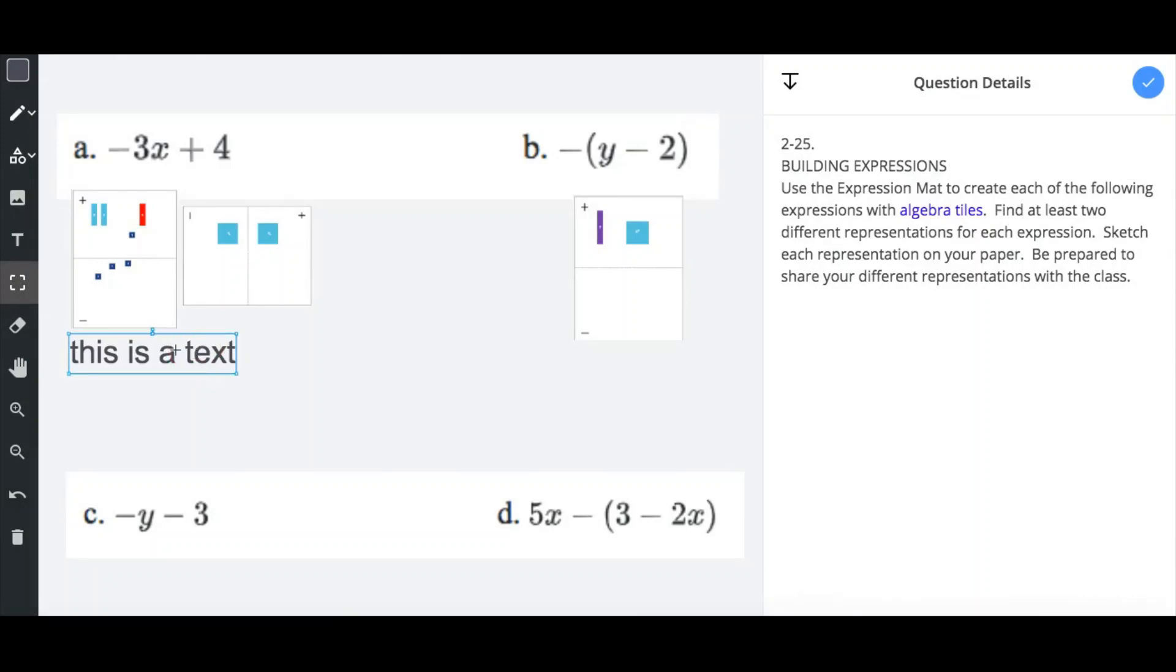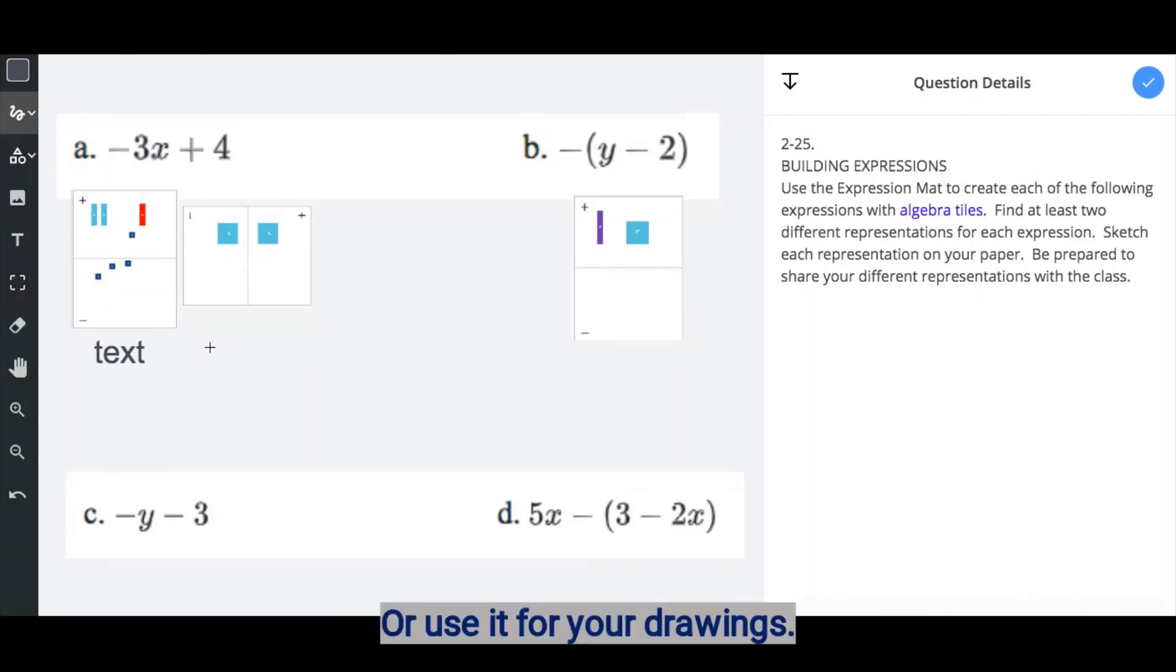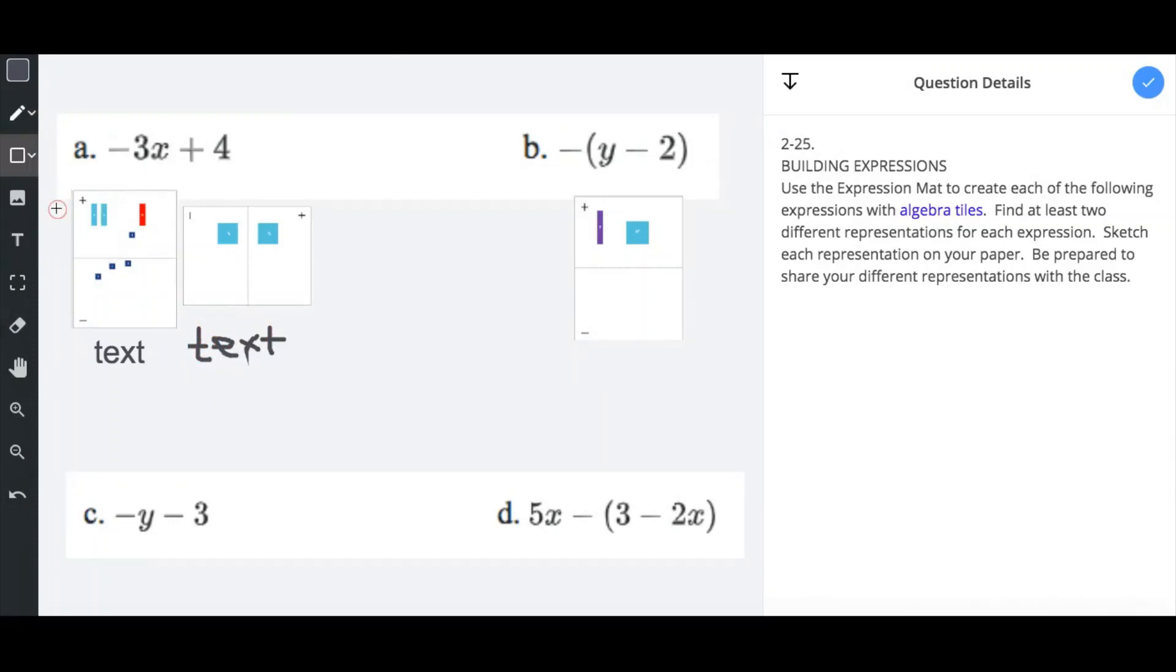If you need to edit your text, you will need to click on the text tool, and then click on where you'd like to edit your text, and then you can edit your text however you need it to. There is also a scribble tool. If you prefer to scribble instead of using your text tool, you can also insert shapes that you need.